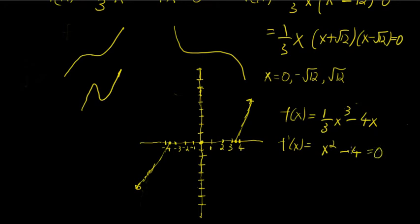If we set that equal to 0, we'll get the location of relative mins and maxes. So x² - 4 = 0, or f'(x) equals, I'm just rewriting what was above. So this means that (x + 2)(x - 2) can be 0. So f'(x) is 0 when either x is -2, or when x is positive 2.